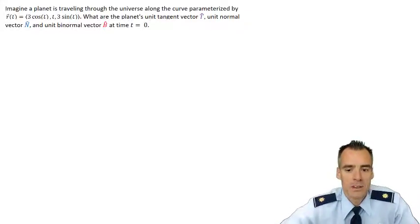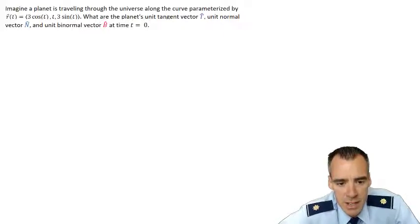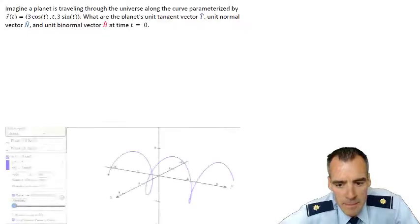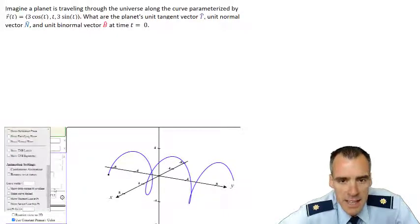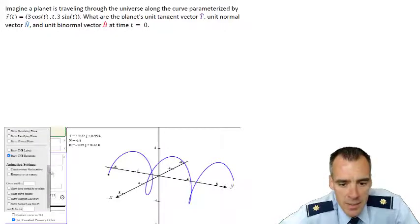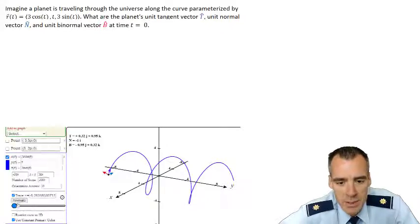We'll use some algebra, some MATLAB computations, and even cheat a bit using CalcPlot 3D to see if our results make sense graphically at the end. If we look at CalcPlot 3D, it actually gives us a TNB framework and you can see that if we trace this out, that framework is constantly changing as the planet flies through 3 space.